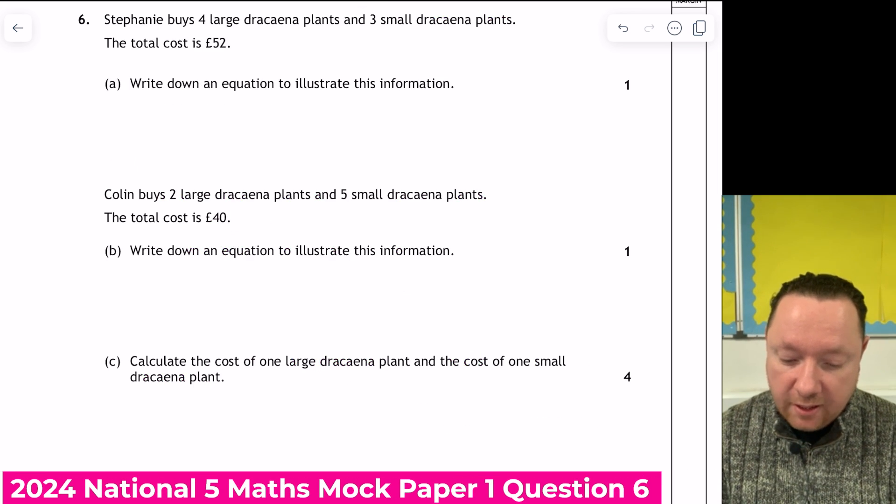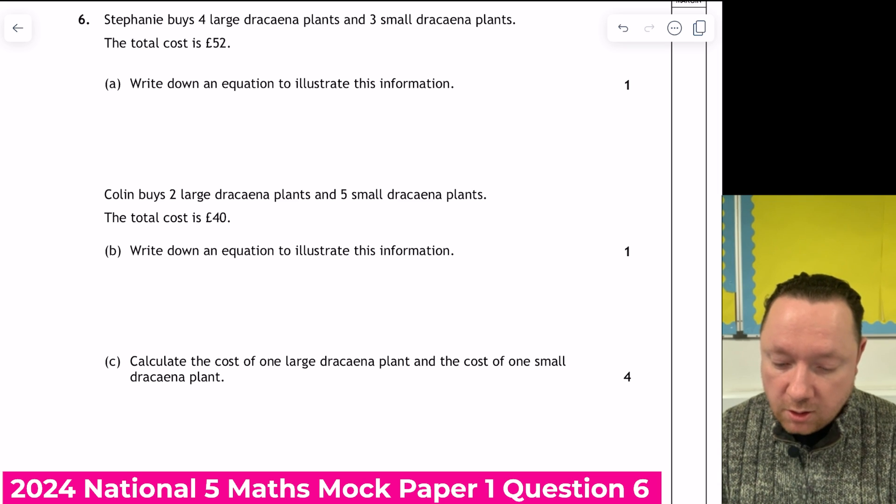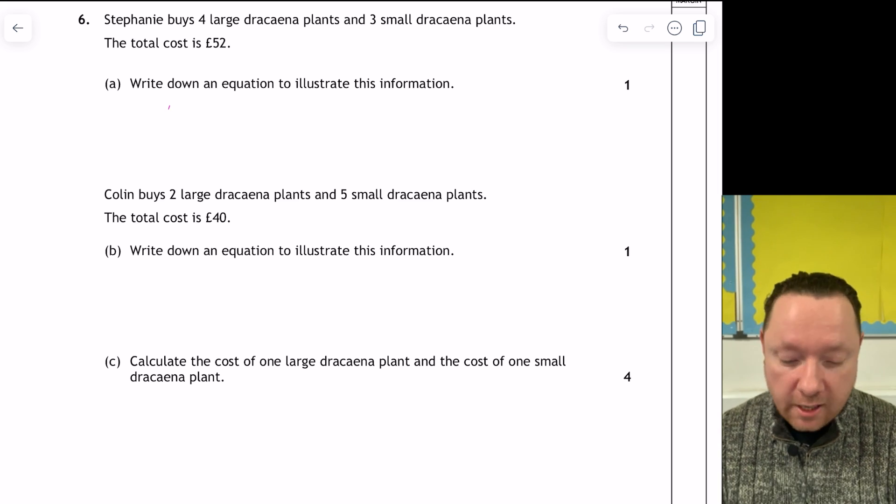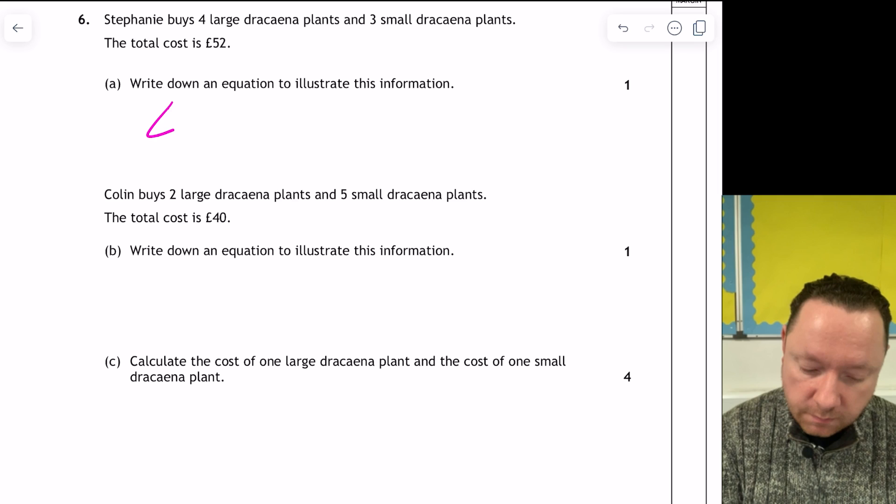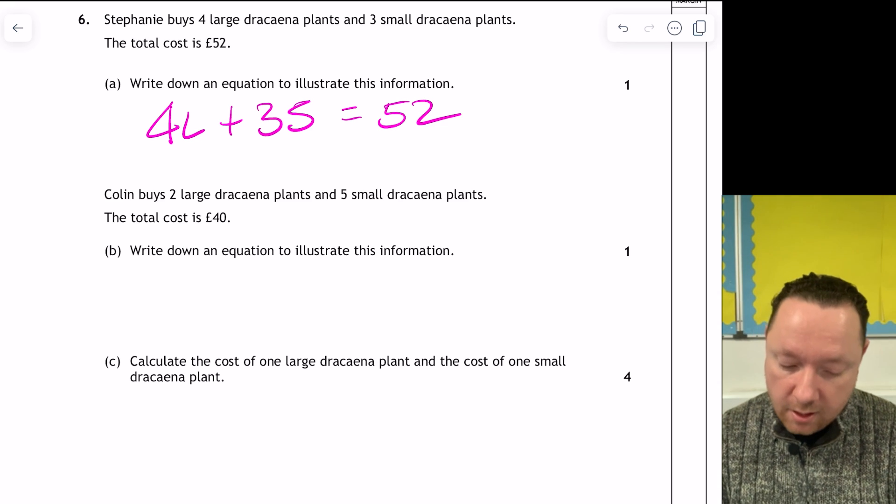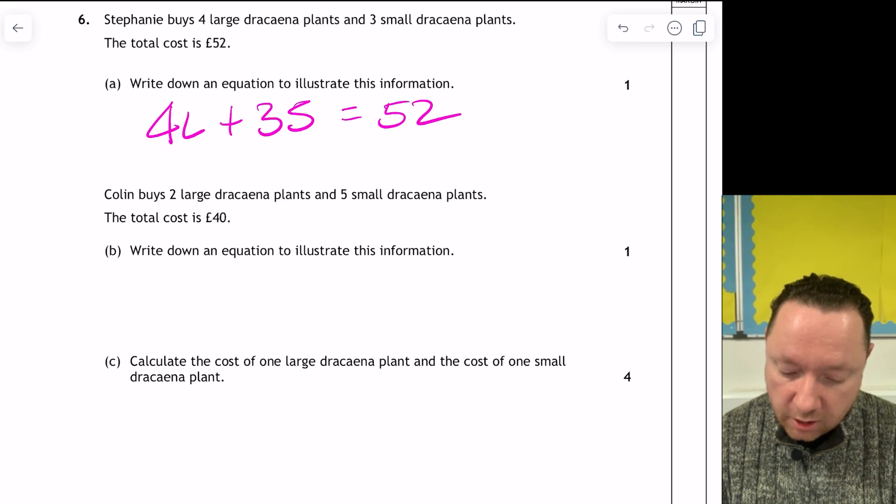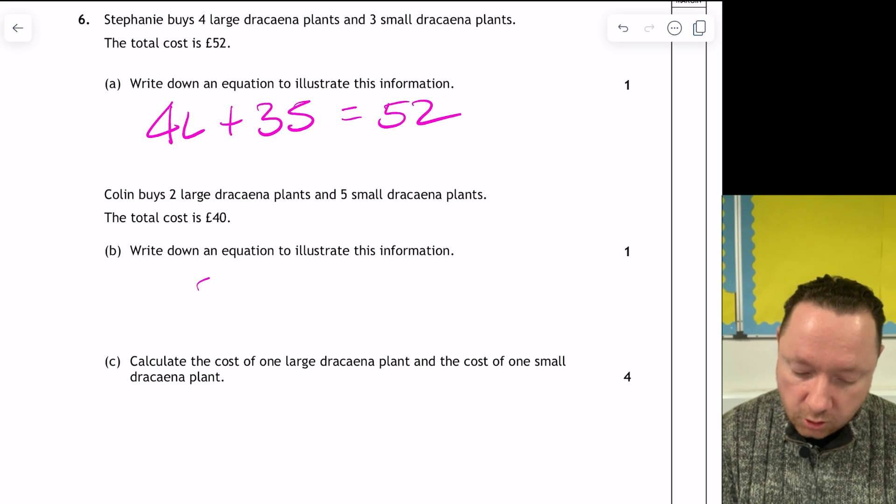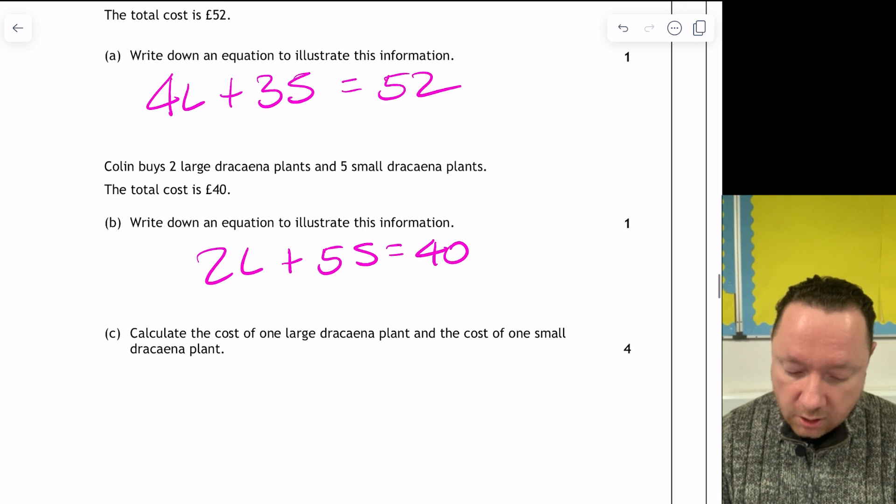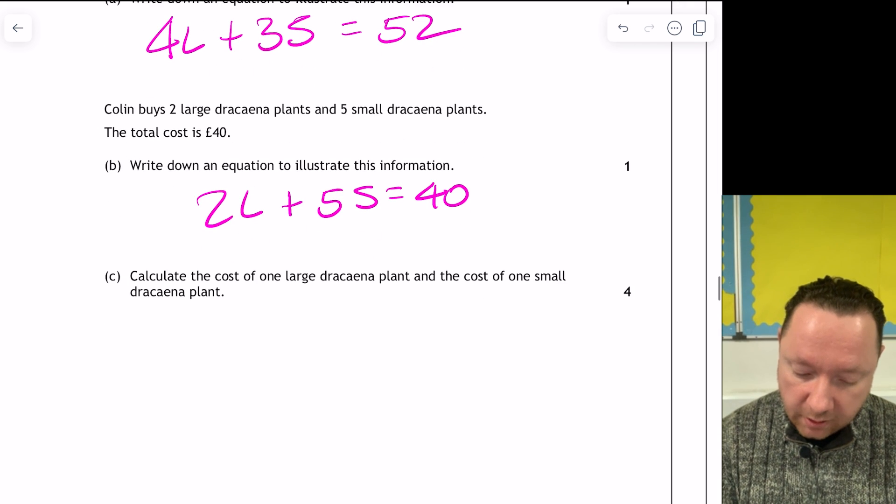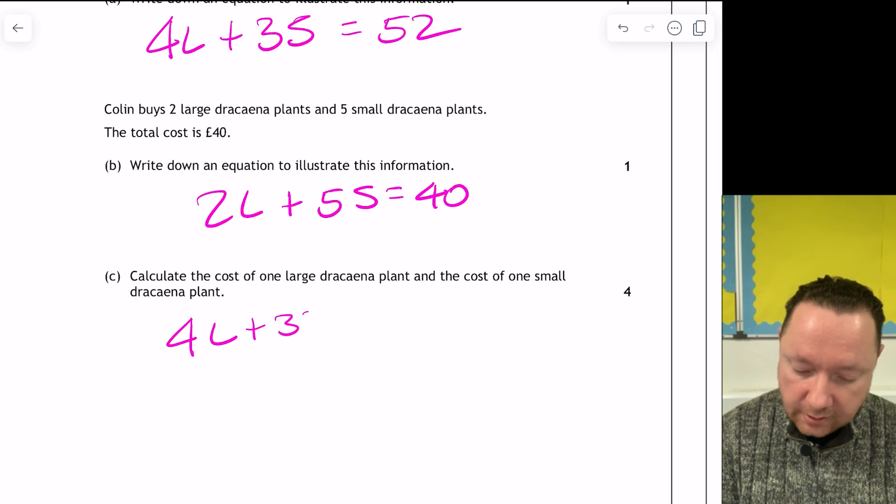Question 6. Stephanie buys 3 large dracaena plants and 4 small dracaena plants. The total cost is 52 pounds, write down an equation. So I'll just use L for large and S for small. 3L plus 4S equals 52. That's an equation. Part B. Column buys 2 large and 5 small for 40 pounds. 2 large plus 5 small equals 40 pounds.